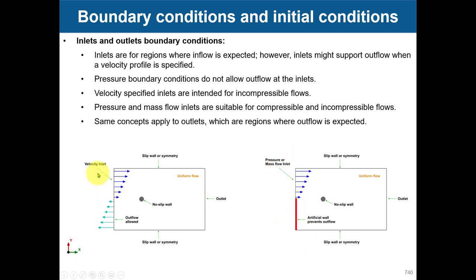With pressure or mass flow you cannot allow outflow, but with velocity you can. Usually, velocity-specified inlets are intended for incompressible flow — velocity and mass flow. But if you are working with compressible flow, it is recommended to use pressure or mass flow. It is just advice; it is not absolutely necessary.